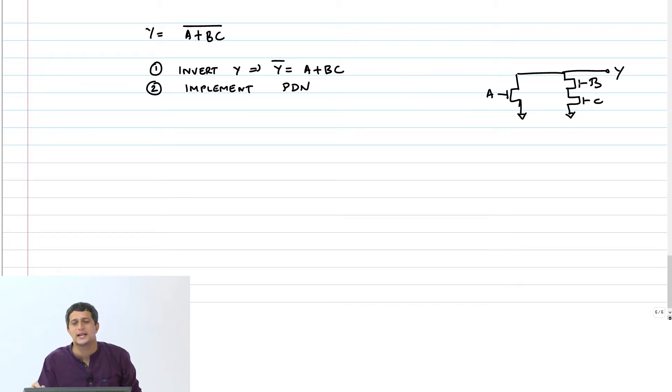I need to make that in parallel and then make it in series with A. That is the way you construct the dual of the network.